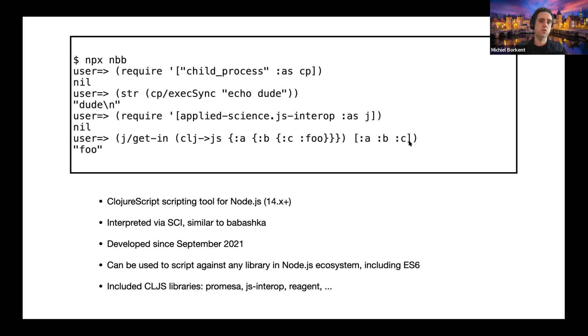We use `get-in` from Clojure to retrieve a value at a path into a data structure, which here is a JavaScript data structure. That's an example of the interop.